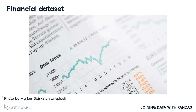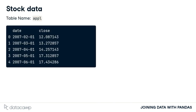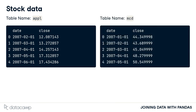In this chapter, we will be working with financial, macroeconomics, and stock market data. In this example, we have a table of the stock prices of the Apple Corporation from February to June 2007. We also have a table of the stock price for McDonald's Corporation from January to May 2007, and we want to merge them.